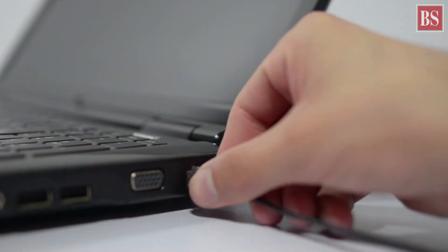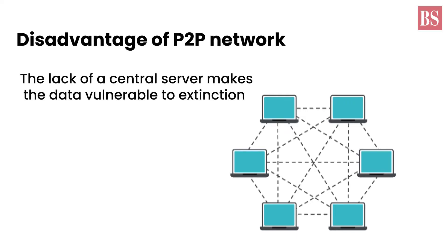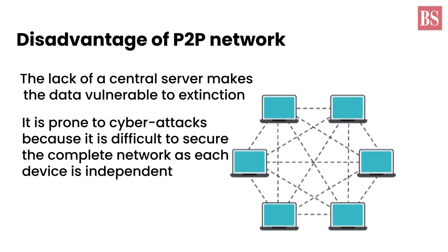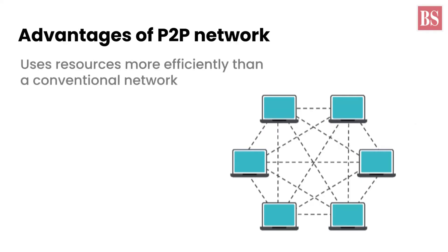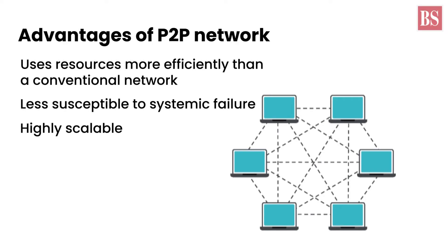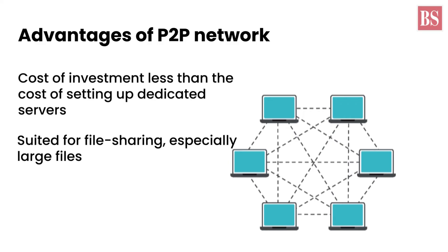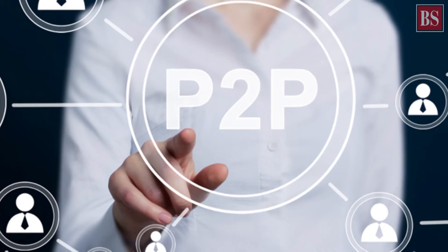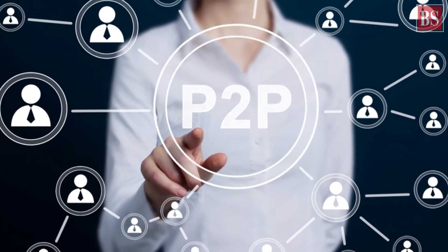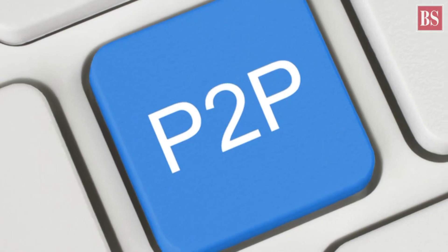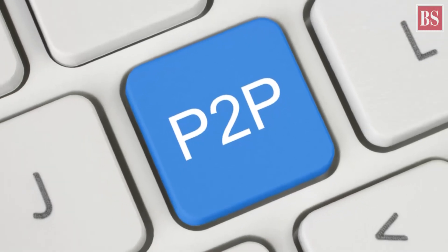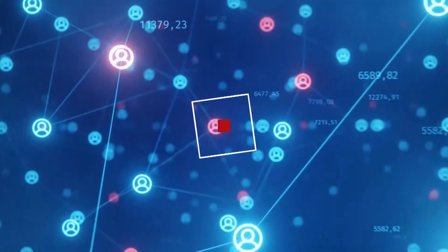This type of networking is not reliable for storing data. The lack of a central server makes the data vulnerable to extinction. Besides, this type of networking is prone to cyber attacks because it is difficult to secure the complete network as each device is independent. But this networking type has its advantages too, most of which stem from the decentralized structure. The P2P network uses resources more efficiently than a conventional network and is less susceptible to systemic failure. Closing down a P2P network is difficult because there is no central server. P2P networks are highly scalable and do not require the kind of investment needed for setting up dedicated servers to disseminate information. This type of network is most suited for file sharing, especially large files.